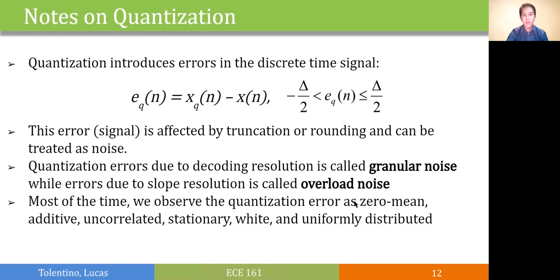Most of the time, we observe this quantization error as zero mean, uniformly distributed, additive, uncorrelated, stationary, and white. Meaning, it's uniformly distributed across all the frequencies.